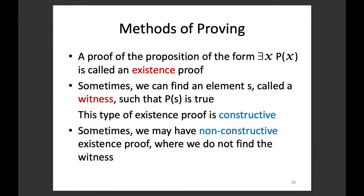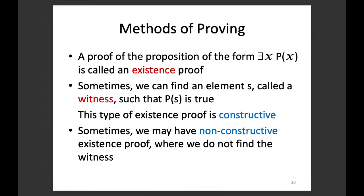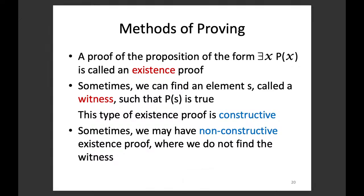In some mathematical arguments, statements are of the form 'there exists x such that P(x) is true.' To show such a statement is true, one method is called the existence proof. We simply find a particular element — a particular value of x — such that P(x) is true. If we can find such an element, we call it a witness. This type of existence proof is called the constructive existence proof.